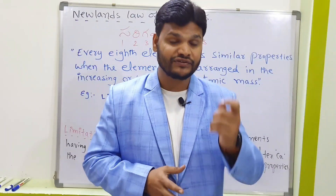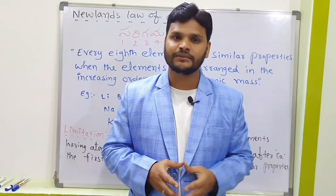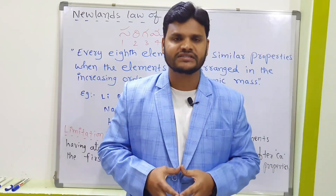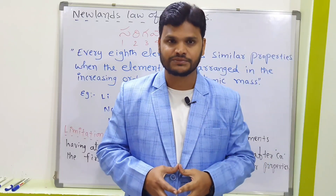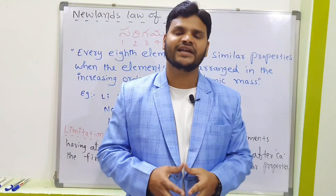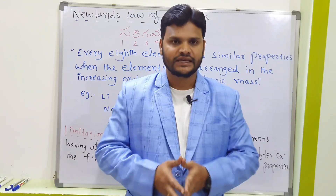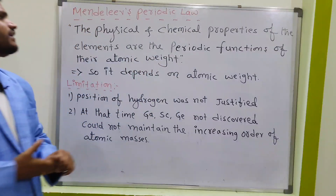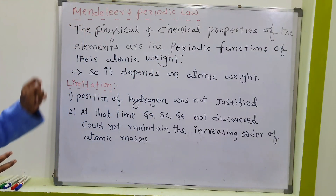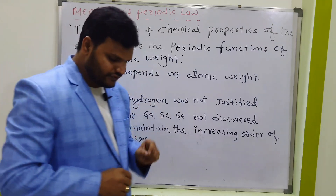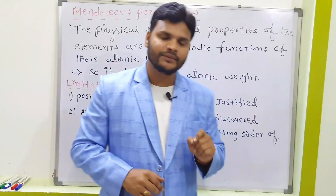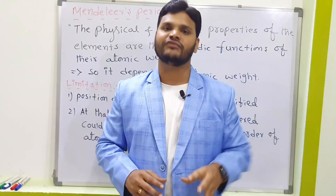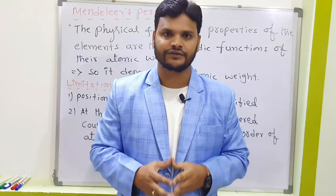At that time only 56 elements were known, and noble gases had not yet been found. Based on Döbereiner's triads and Newland's Law of Octaves, one more scientist came in the 19th century — his name is Mendeleev. His periodic law states: the physical and chemical properties of the elements are the periodic functions of their atomic weight.